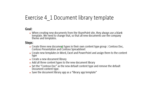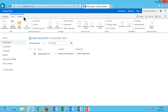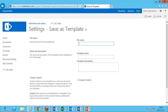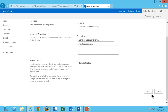So to recap: we have created three new document content types in their own content type group. We created new templates, added a new document library, and added all three content types to that library. We set the Contoso Doc as the new default content type. We haven't yet saved the new document library as a template — let's do that too. That's very simply done: go into Library Settings and save this document library as a template. I'm saving it as 'Contoso document library,' without the content, and click OK.